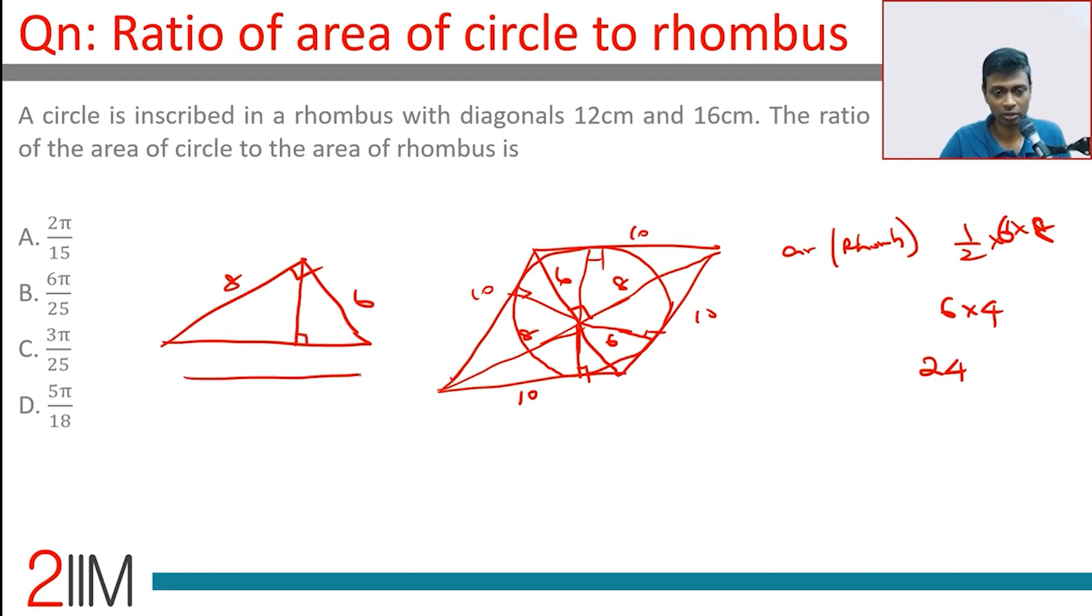Drop this altitude. This is h. You can use the idea of similar triangles and get there, or you can substitute area: half into 8 into 6 equals half into 10 into height. Whether you take this as base and this as height, or this as base and this as height, area should be the same. The half gets knocked off, height is 48 by 10 or 24 by 5. The height of that right angle triangle is nothing but the radius.